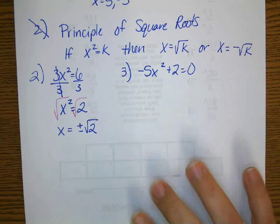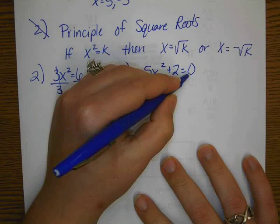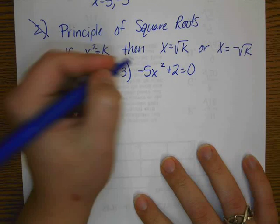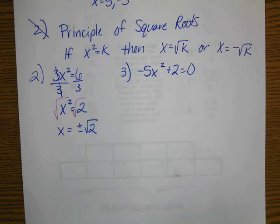Number 3, negative 5x squared plus 2 equals 0. So we'll subtract the 2 over, and then divide by negative 5. Go ahead and pause it. Take a minute and give this problem a try.